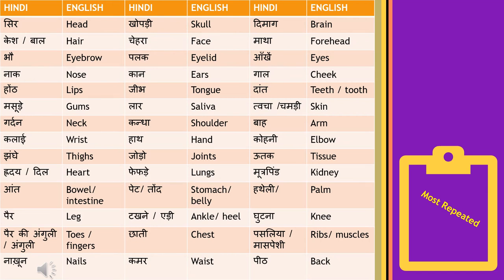Toes ko hum bolte hai 'pair ki ungli'. 'Chati' means chest. 'Pasliya' means ribs or rib cage, and 'mass peshi' matlab muscles. 'Nakhoon' means nails. 'Kamar' ya waist — 'kamar' ko bolte hai waist. 'Peet' matlab back.